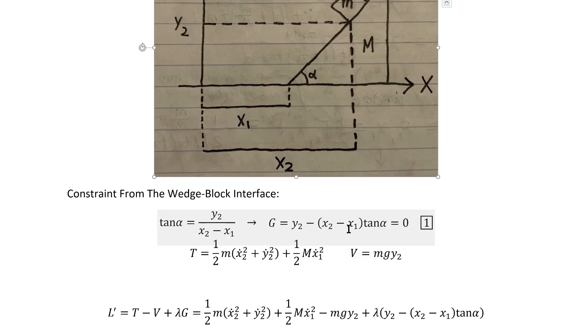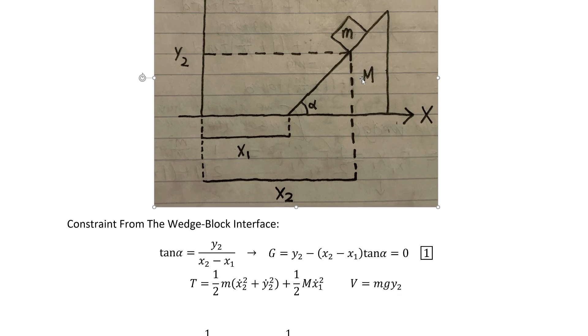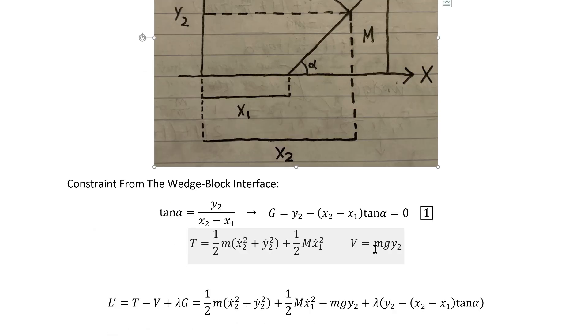That's the first piece of information we need to write the Lagrange multiplier modified Lagrangian. The other two are the usual kinetic energy and potential energy, which are quite easy to write down. Of course, there's some constant gravitational potential energy of the wedge that we can ignore because it doesn't change. Other than that, it's all obvious.